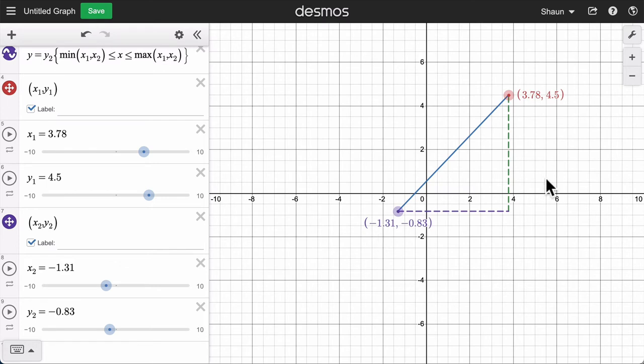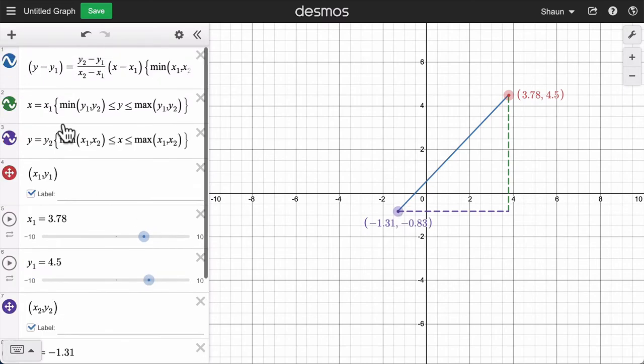the value of this leg right here by subtracting the X values of these two points, and then squaring them and adding them up. It's the Pythagorean theorem. It's a leg squared plus a leg squared equals the hypotenuse squared.